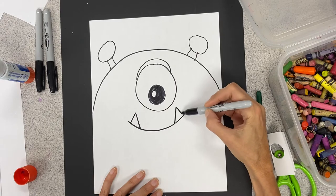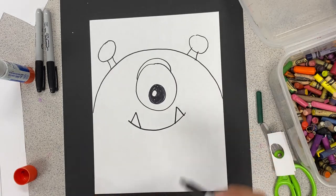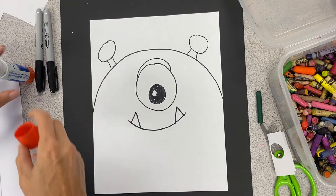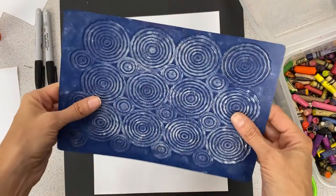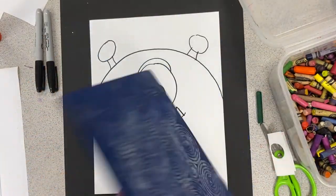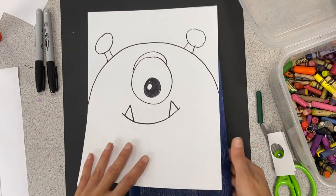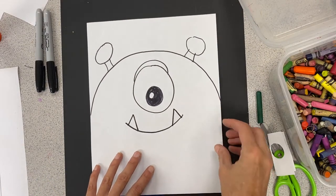So now what I want to do is do my rubbing, but I want to avoid the areas that have the eyes and the teeth because I'd like those to stay white. So I am going to get, ooh this looks like a fun one, I'll try this circle one. I'll put my texture underneath.